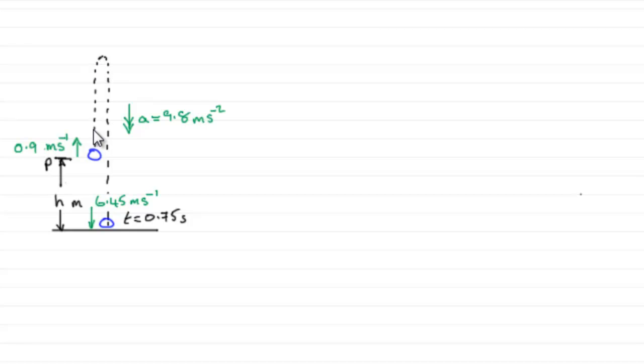So in other words, this height just up here. Now I've updated the diagram with the value of u that we found in part A, 0.9. So it's projected initially upwards with a speed of 0.9 meters per second. But we need to find this height.